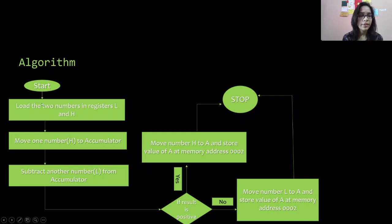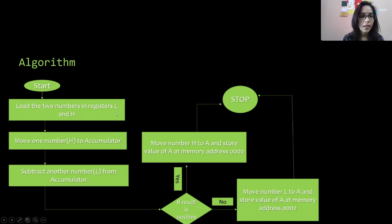After considering these assumptions, we have drawn a flowchart. First of all, we load the two numbers into register pair HL. The first number, 15, will come into register L and the second number, 25, will come into register H. So we have the two numbers in two different registers.